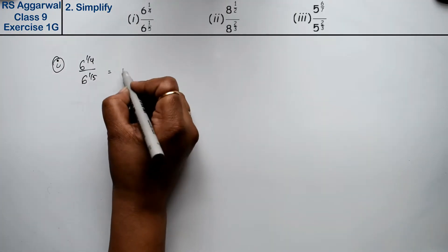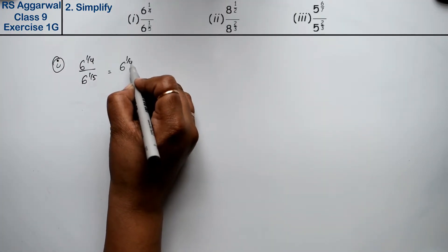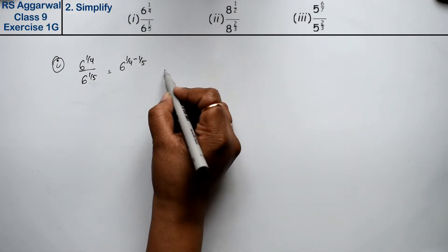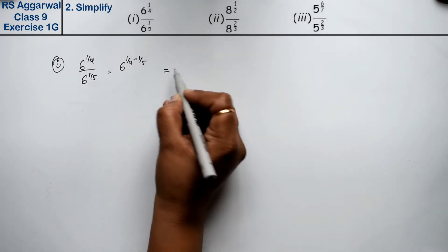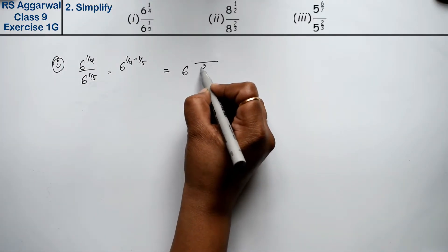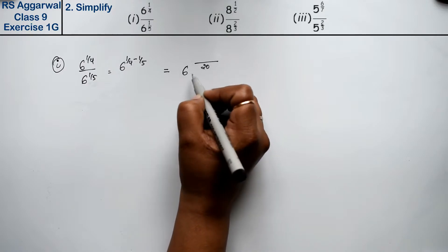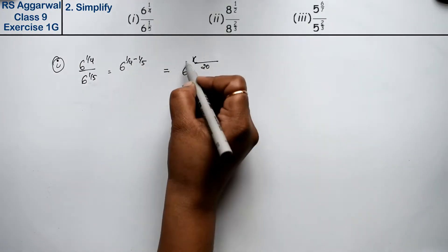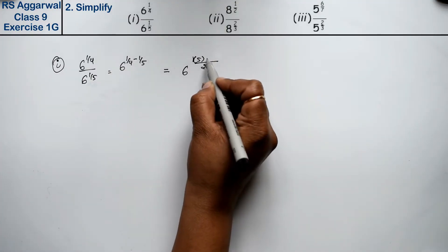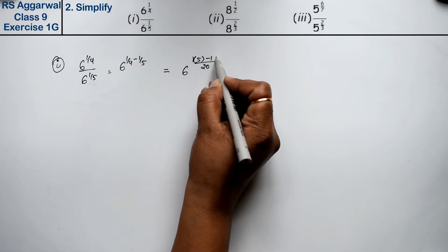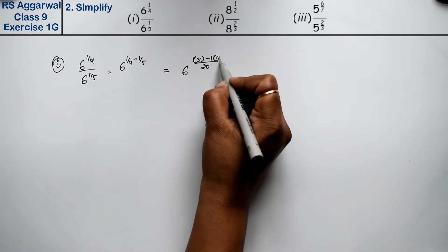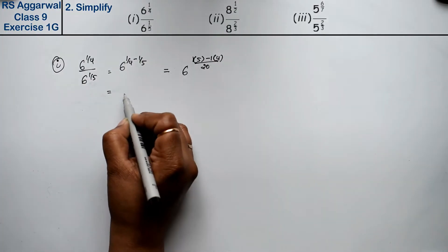Base same hai, to six ki power one upon four minus one upon five ho jayegi, kyunki divide mein powers minus ho jati hai. LCM of four and five is twenty. Is one ki multiplication four mein hogi — five — aur is second wale one ki five, four is twenty.